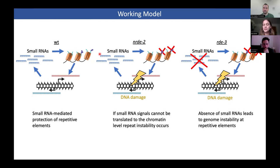It seems to be clear from research in other model organisms that repetitive DNA also needs heterochromatin to be maintained. On the flip side of that, are small RNAs required to enlarge repetitive regions? How does the mechanism of increasing repeats occur?